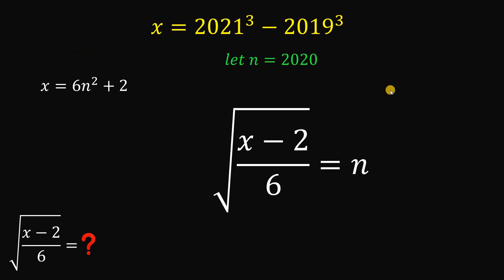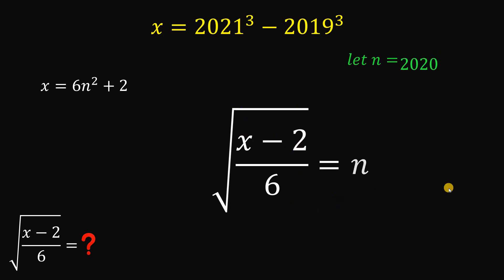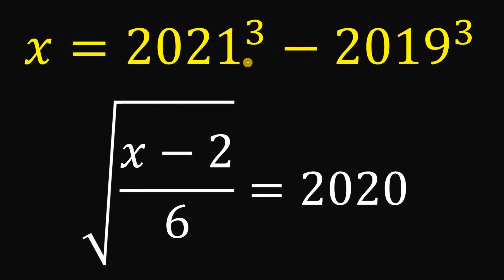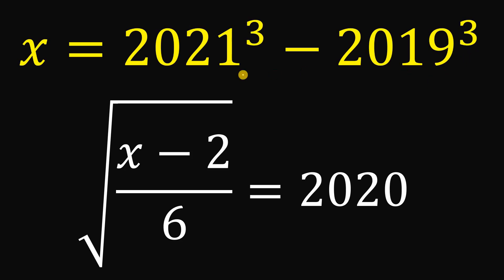We know n equals 2020. Therefore, the square root of x minus 2, all over 6, simply equals 2020 — where x is 2021 cubed minus 2019 cubed. Given that x equals 2021 cubed minus 2019 cubed, the numerical value of the square root of x minus 2 all over 6 is 2020. And as always, we are done.